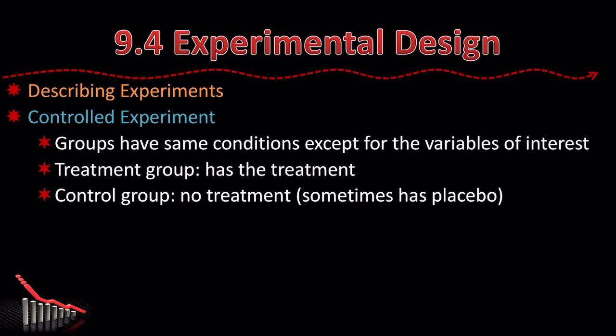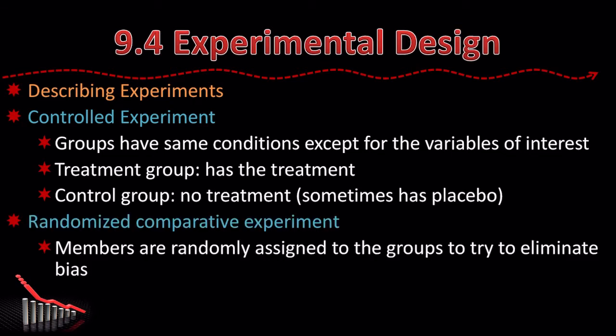Everything is the same about the two groups. Sometimes one gets a treatment, the other doesn't. The treatment group gets the treatment, like an experimental drug or whatever. The control group does not. Sometimes they're given a placebo, like a fake drug that doesn't do anything — most often a sugar pill. Or we could do a randomized comparative experiment, where the members are randomly assigned to the groups to try to eliminate bias.